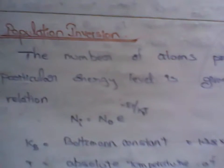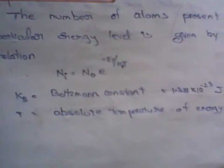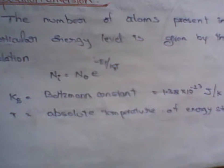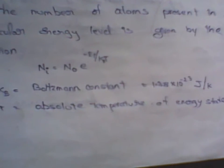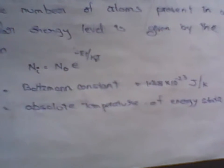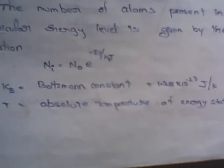Now come to know about population inversion. The number of photons present in a particular energy level is given by the relation Ni = N0 × e^(-E/kBT), where kB is the Boltzmann constant equal to 1.38 × 10^-23 joules per Kelvin, and T is the absolute temperature of the energy state.